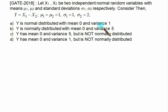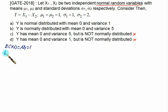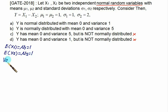The answer choices are: (a) Y is normally distributed with mean 0 and variance 1; (b) Y is normally distributed with mean 0 and variance 5; (c) Y has mean 0 and variance 5 but is not normally distributed. Since y is a combination of normal random variables, it must also be normal, so choices c and d are false — it's either a or b. Computing: E(x1) = mu1 = 1, and E(x2) = mu2 = 1. Var(x1) = sigma1² = 1² = 1.